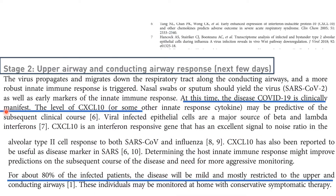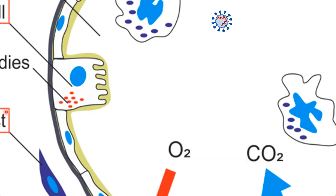Now we go to Stage 2 — the upper airway and conducting airway response over the next few days. The disease is now clinically manifested. The level of CXCL10 and innate response cytokines is increased. About 80% of infected patients will have mild disease, mostly restricted to the upper and conducting airways. The virus attaches to the type 2 pneumocyte mainly through ACE2 receptors, which are present in type 2 cells but also in type 1 cells, with greater affinity for type 2.